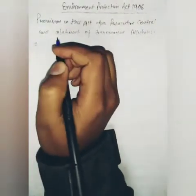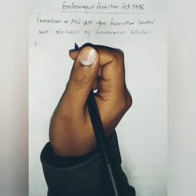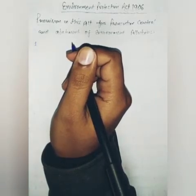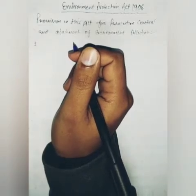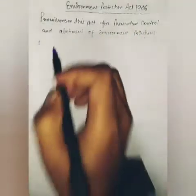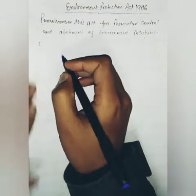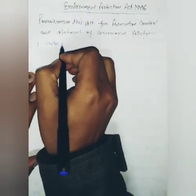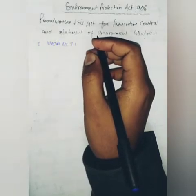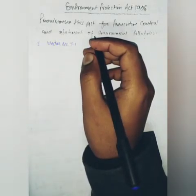The first point is under Section 7.1: no person carrying on any industry, operation, or process shall be permitted to discharge any environmental pollutant in excess of prescribed standards. So here we are talking about provisions related to prevention and control of environmental pollution. If you are talking about any industry operations, then you have to take permission from the appropriate government.